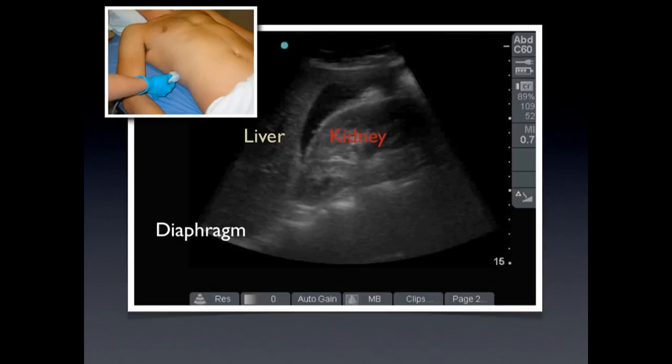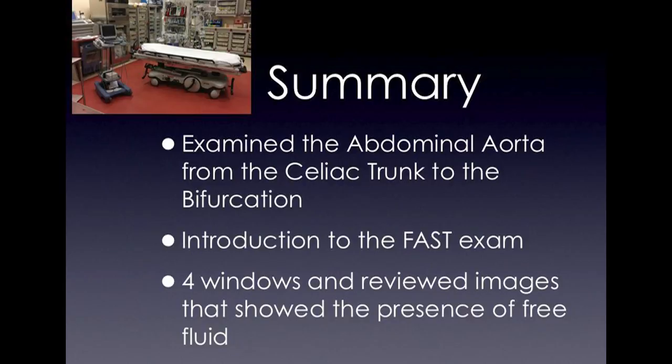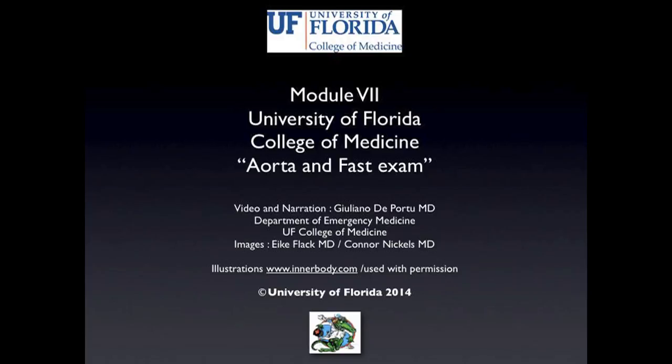As a review, we've talked about the aorta and how we're able to scan down it, making sure there's no abnormal dilatation or aneurysm. We've done a little introduction to the FAST exam and talked about the four windows included in it. That's it for the aorta and FAST exam — see you in the lab.